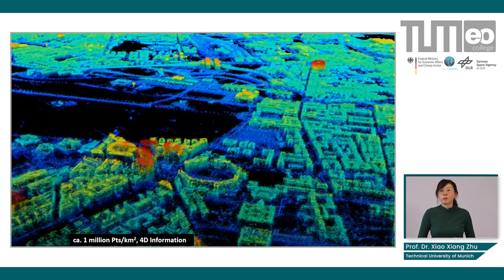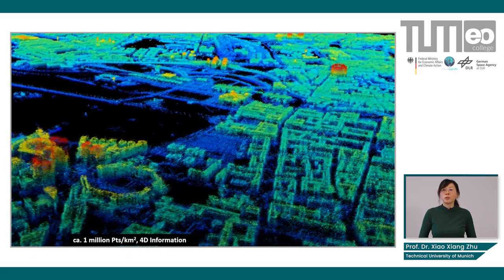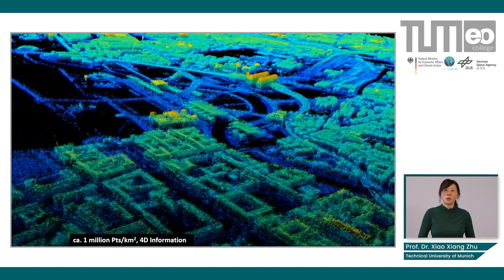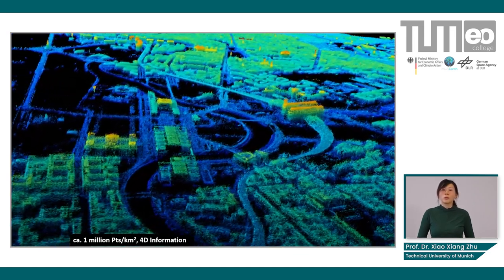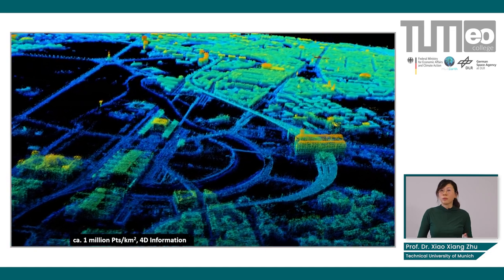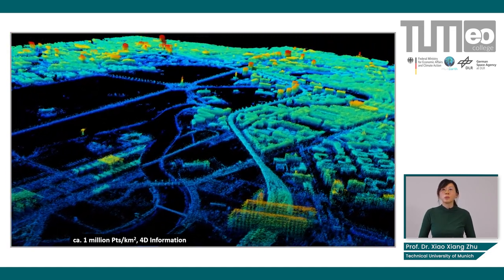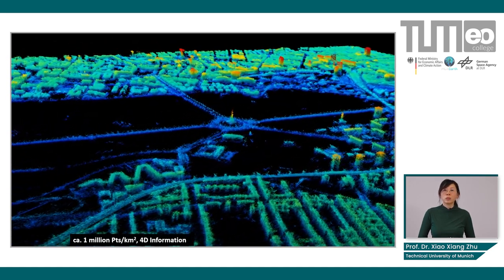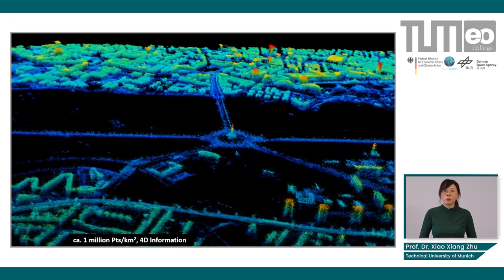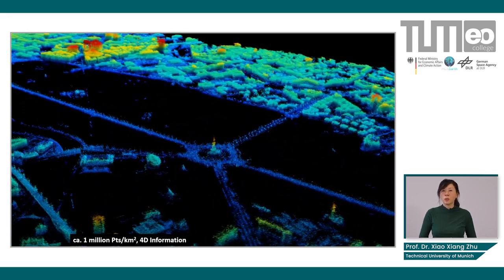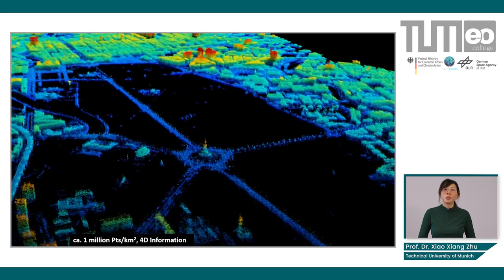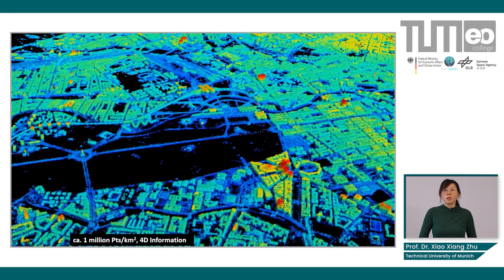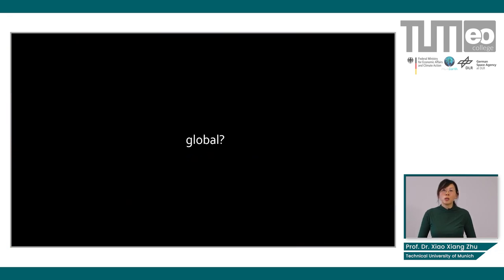You can easily see Berlin's central railway station, the Victory Column in the upper left corner, and along the roads you see regular patterns — those are lamp poles. With the highest resolution radar data, we can achieve a point density of one million points per kilometer squared. This is very useful for extracting urban information, but the only limitation is that such high-resolution data is not available globally.